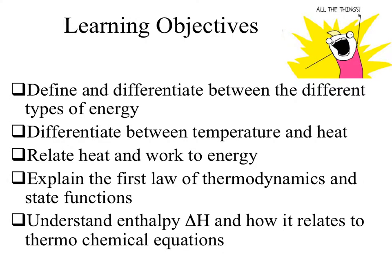For this first lesson, our objectives are to first and foremost be able to define and differentiate between the different types of energy. You're going to be able to differentiate between temperature and heat, relate heat and work to energy, show that relationship and use it for calculations, and explain the first law of thermodynamics, as well as define and describe state functions.